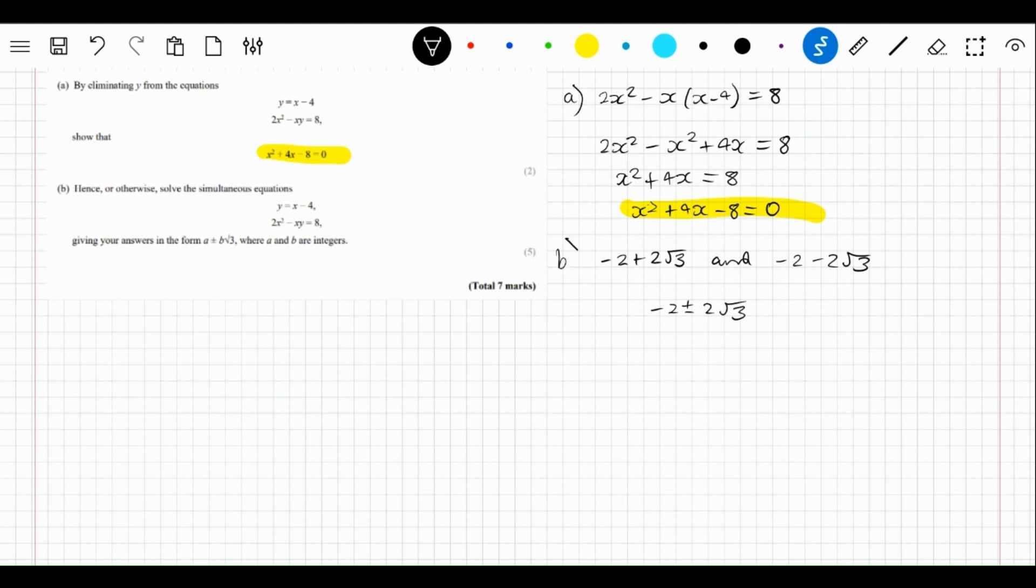We can then use our values for x to sub back into the top equation to work out the values for y. If we use this plus one first, we do y equals minus 2 plus 2 root 3 minus 4.